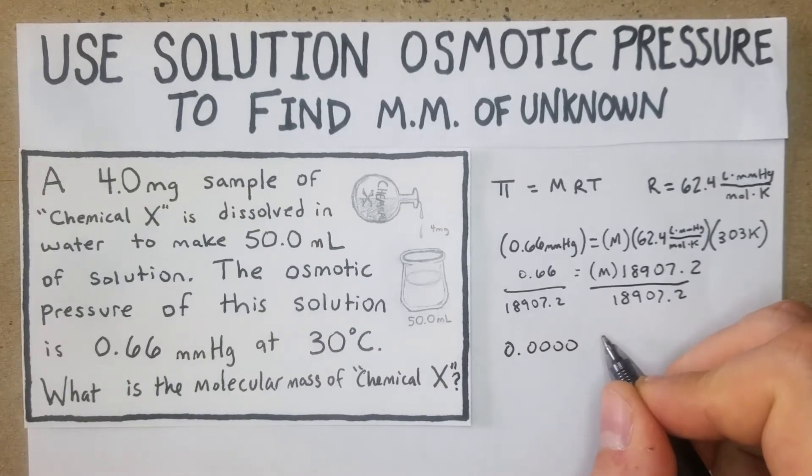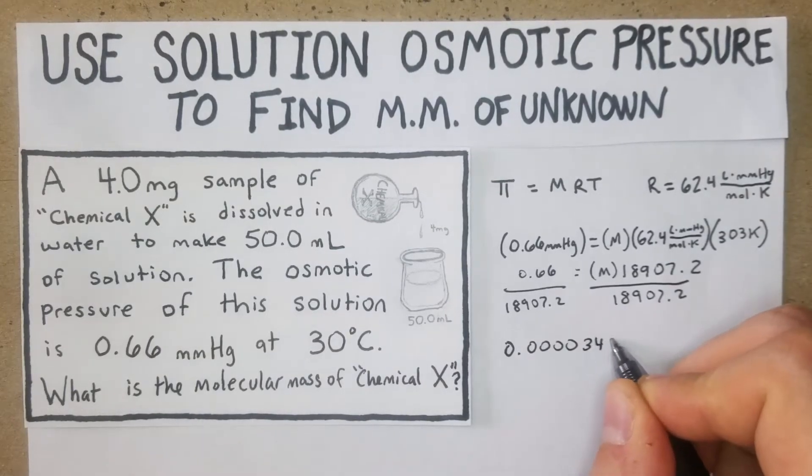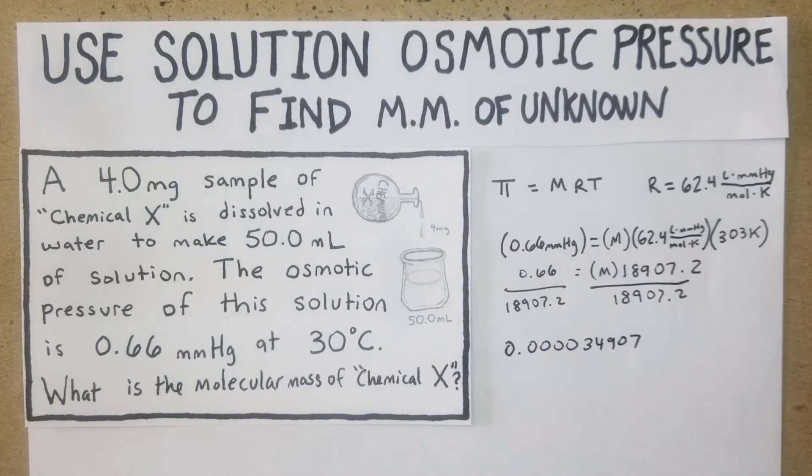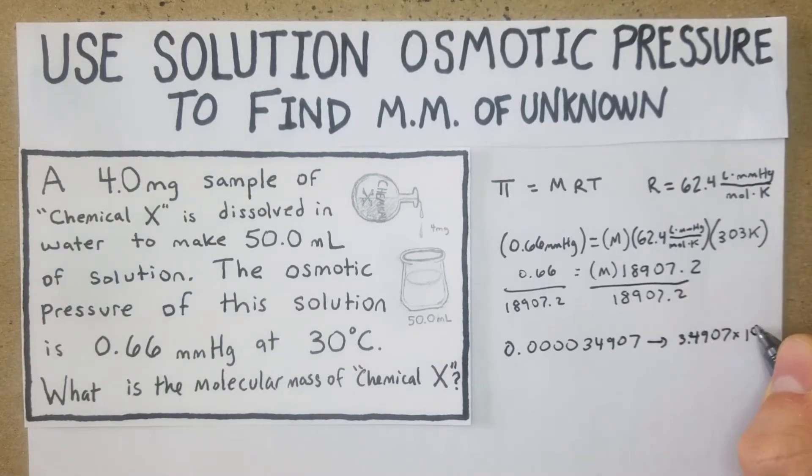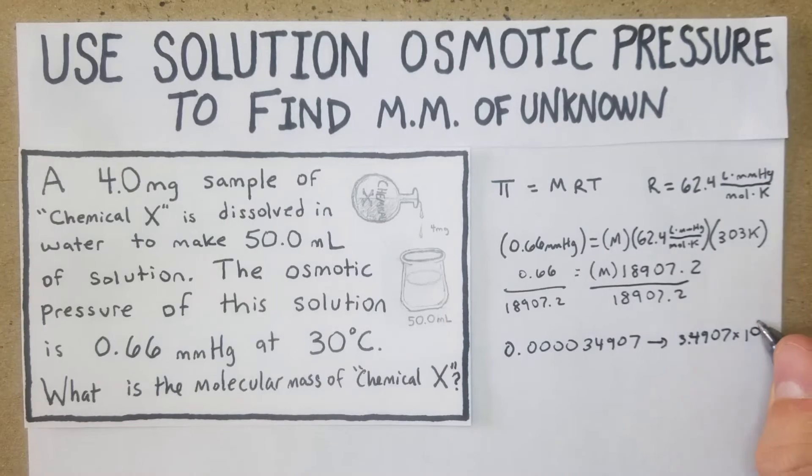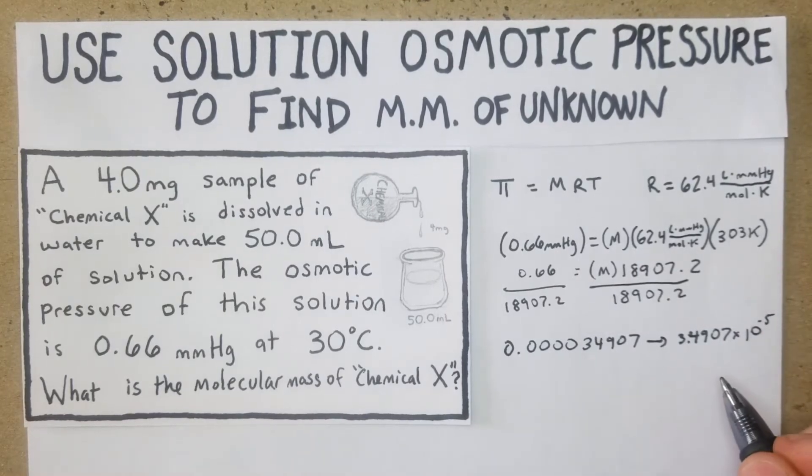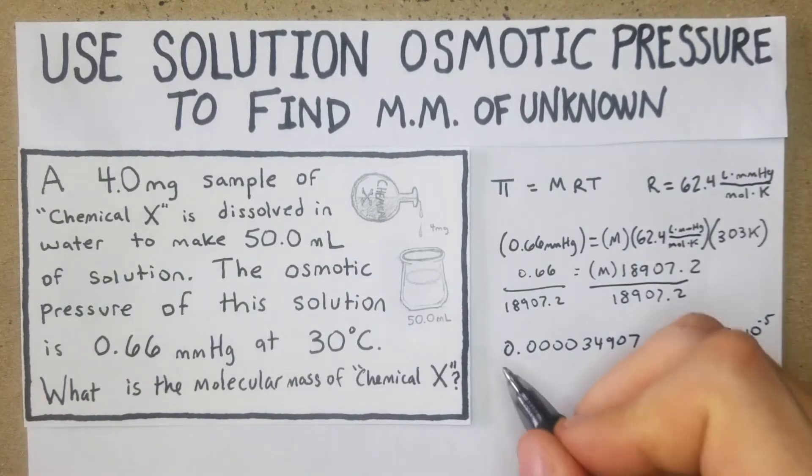We get a really small number: 0.00034907, and we can just put that into scientific notation - that's going to be 3.4907 times 10 to the negative 5th.